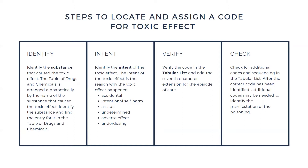Accidental intent: an accidental toxic effect is an unintentional effect of a substance that was either taken inadvertently or in excess. For example, nausea and vomiting are accidental side effects of excessive alcohol consumption. The accidental intent is the default for toxic effects that cannot be identified as intentional, assault, adverse effect, or underdosing.